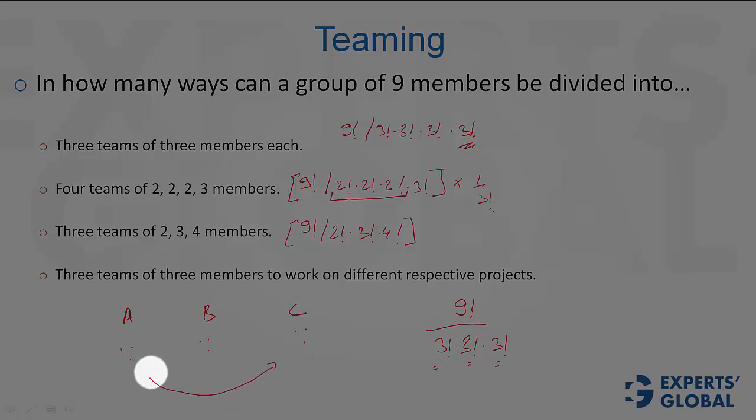Now, if these guys swapped positions, these 3 guys working on project C and these 3 guys working on project A would be a new case. And therefore, we should not divide this value by anything. This is very much the answer.